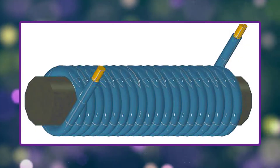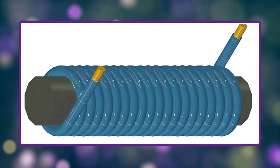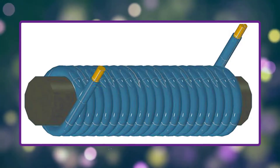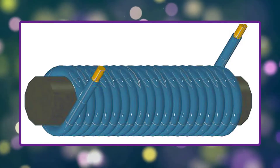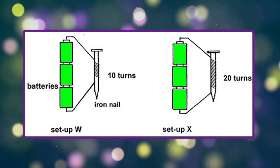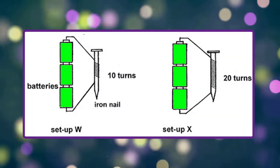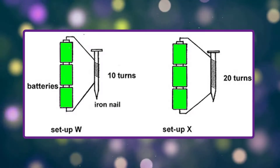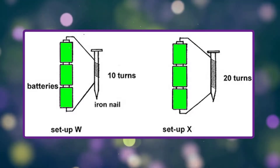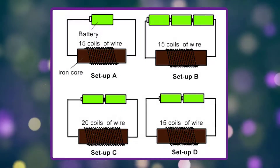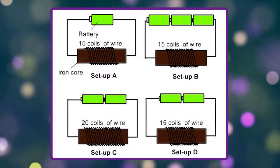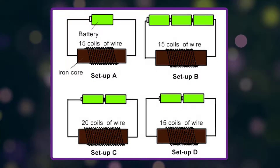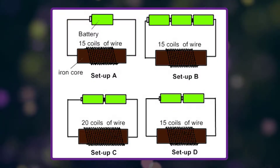A simple electromagnet consists of a coil of wire wrapped around an iron core. A core of ferromagnetic material like iron serves to increase the magnetic field created. The strength of the magnetic field generated is proportional to the amount of current through the winding.